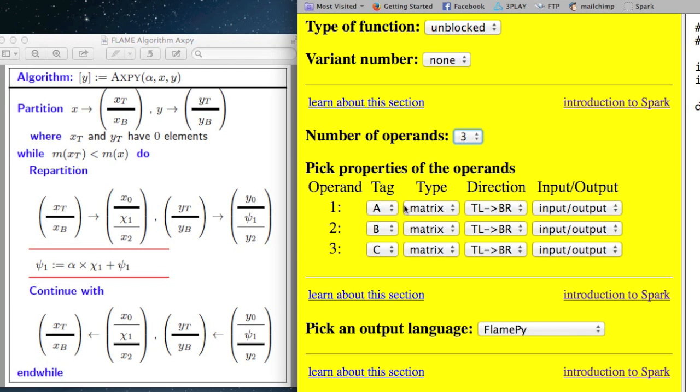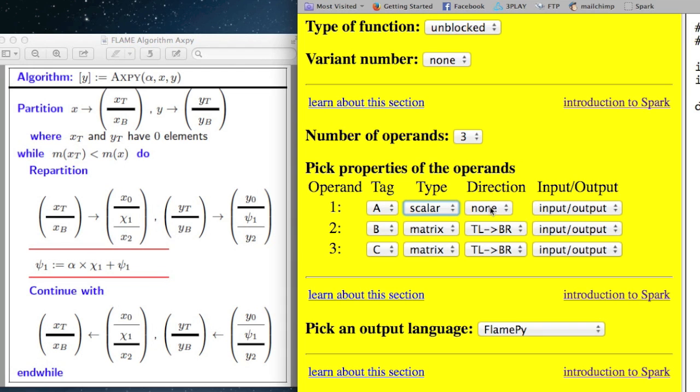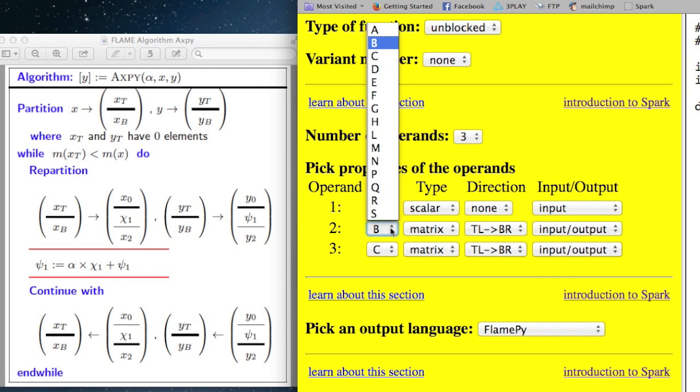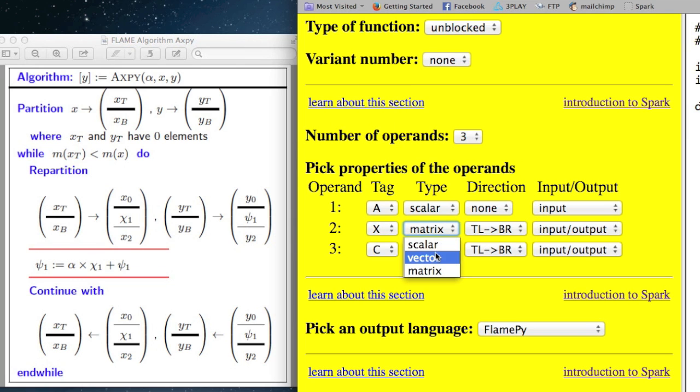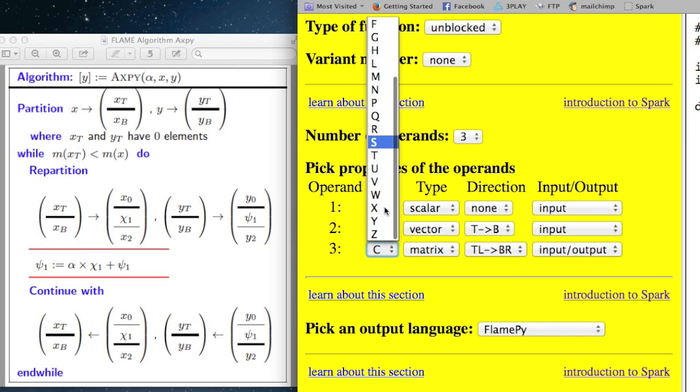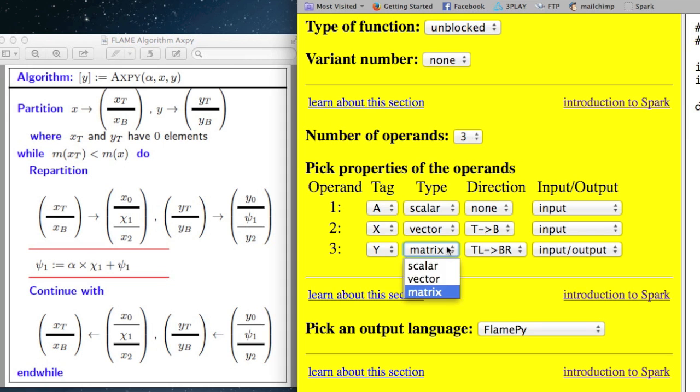The first one is going to be alpha, which is a scalar, and it's just input. Then I need vector x, which is a vector, and we'll march through it from top to bottom. That's important to look at right here. And it's just input.